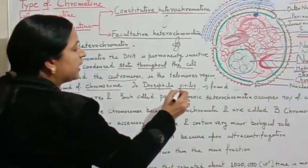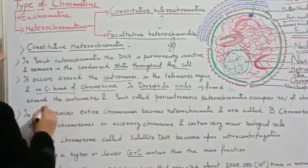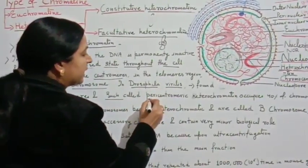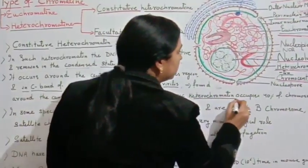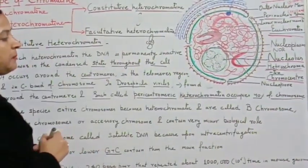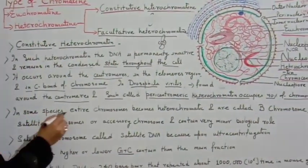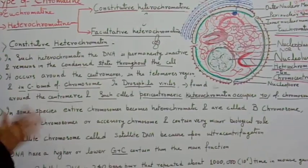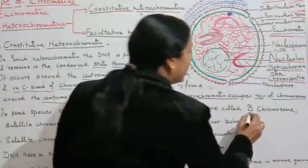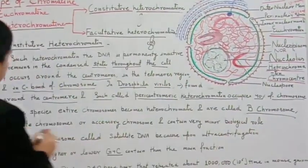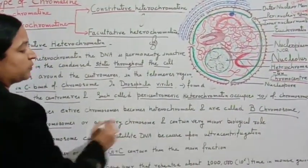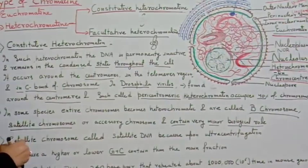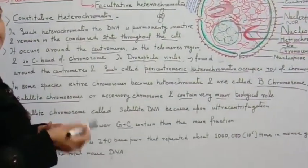For example, in Drosophila, the heterochromatin region found around the centromere is called pericentromeric heterochromatin, which is 40% of the total chromosome. In some species, entire chromosomes become heterochromatin. These include B chromosomes, satellite chromosomes, and accessory chromosomes, which have very minor biological roles. They consist of repetitive sequences of DNA and are species-specific.